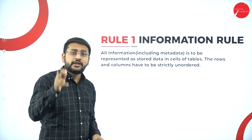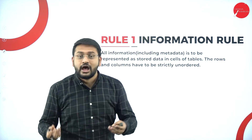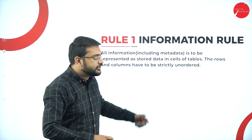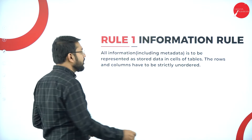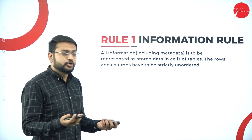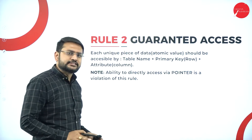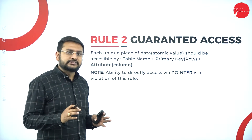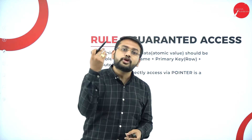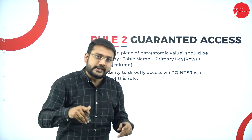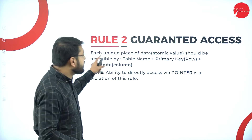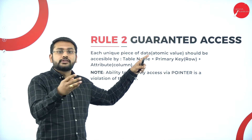I have to store my data in the form of rows and columns — that is what Rule Number One, the Information Rule, says. Rule Number Two is Guaranteed Access. Whatever information you have stored in the rows and columns, you should be able to access all of that data. That is the Guaranteed Access rule.